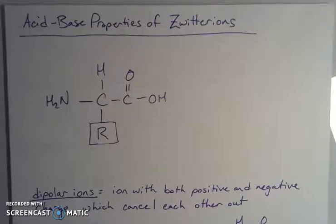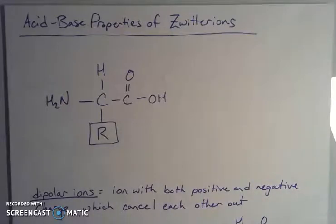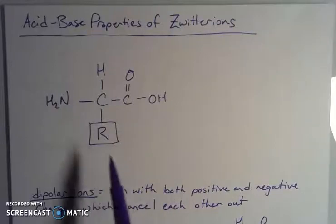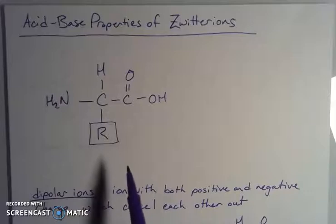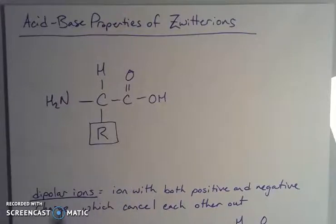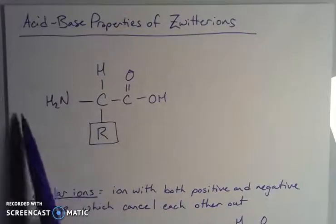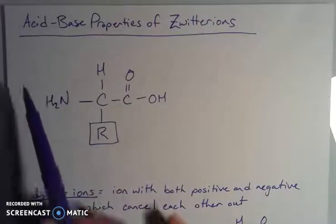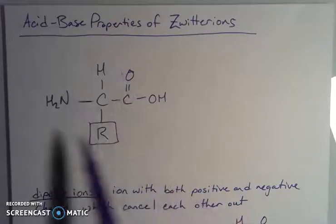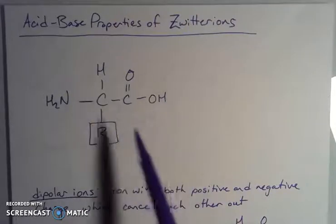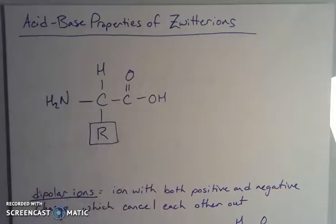I'm excited to talk to you today about zwitterions, in no small part because it's just a dang cool vocabulary word. What I want to talk about is the acid-base properties of amino acids, of alpha amino acids. We have amino acids that are in proteins — these are the monomers that make up the polymers that are proteins. The amino acid structure is usually written like this: we have an amine group, we have a carboxylic acid group, hence the name amino acid.